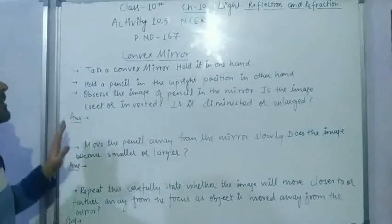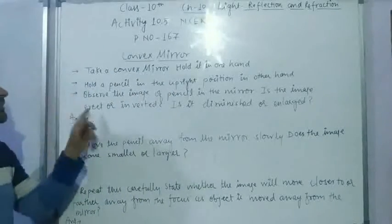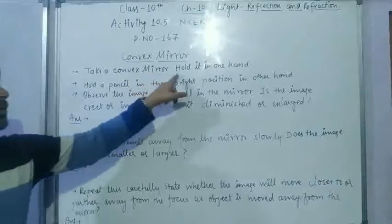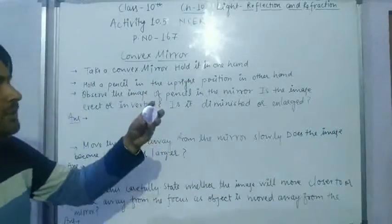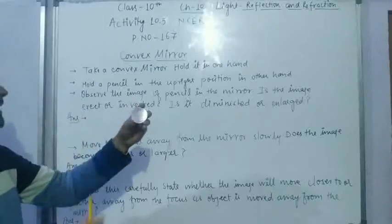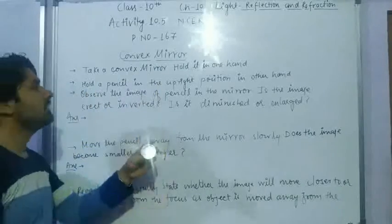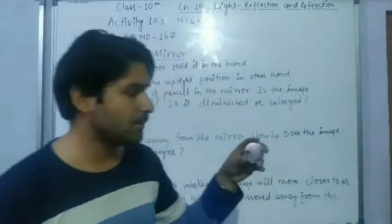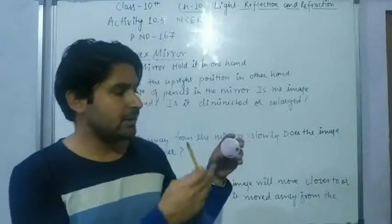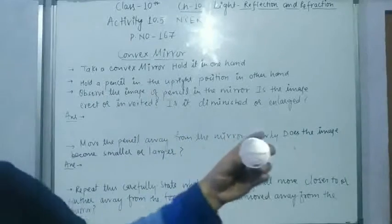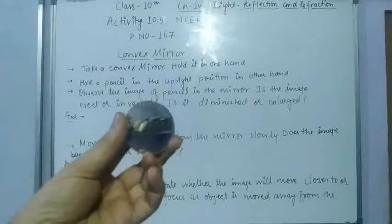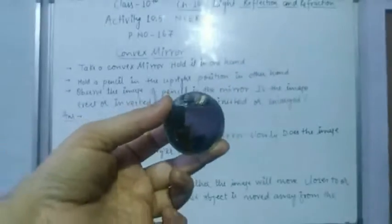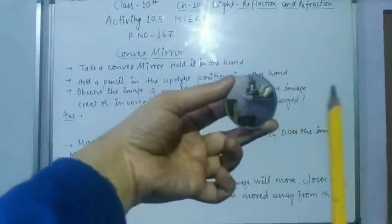Now let's look at this activity regarding the convex mirror step by step. The first instruction is: take a convex mirror and hold it in one hand. I have this convex mirror that we will perform the activity with. Then hold a pencil in the upright position in the other hand.